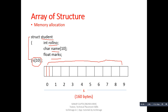The first part will store roll number of a student, the second part will store name, and the third part will store marks of a student. The size of this first block, whose index is 0, is 16 bytes. To store information of the second student we have another block, also 16 bytes, with index 1. For the third student we have index 2, and so on — indices 3, 4, 5, 6, 7, 8, and 9.